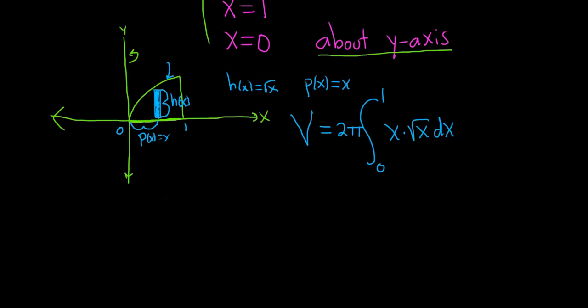Let's go ahead and rewrite this. So the volume is equal to... Think of the square root of x as x to the 1 half. So when you multiply it by x to the 1, we'll add the exponents. So this will be 2 pi times the definite integral from 0 to 1. So 1 plus 1 half will give us x to the 3 halves dx.